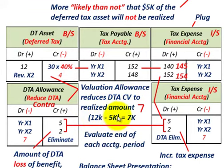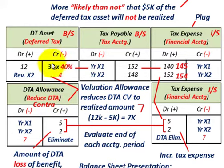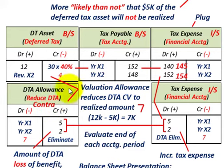That's the basic case for setting up a valuation allowance to reduce the deferred tax asset's carrying value to the realized amount. Remember, the deferred tax asset allowance account is a contra account. That'll conclude our discussion.